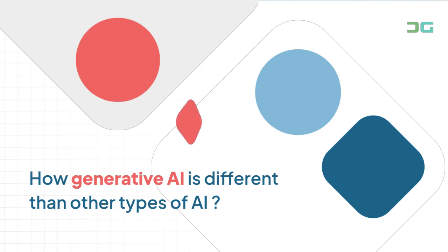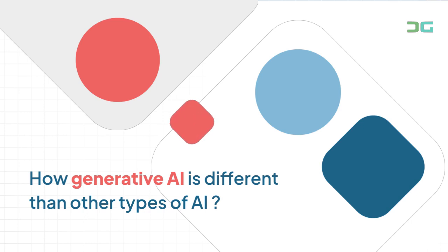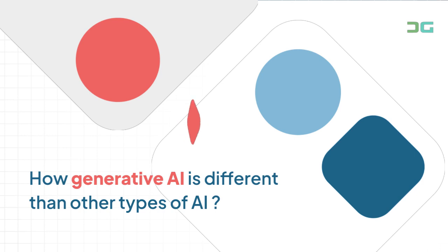Generative AI is often used in applications such as image generation, video synthesis, language generation, and music composition. But to really understand this new tool, we need to know first where it fits in the broader AI landscape.